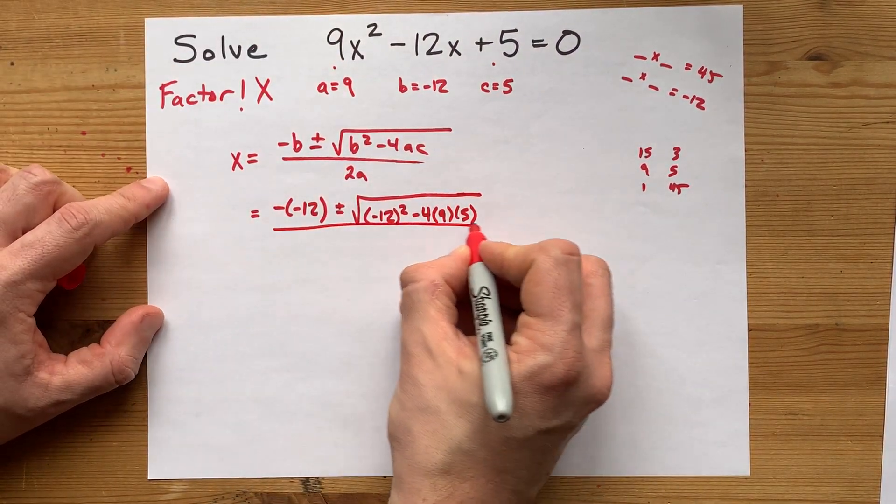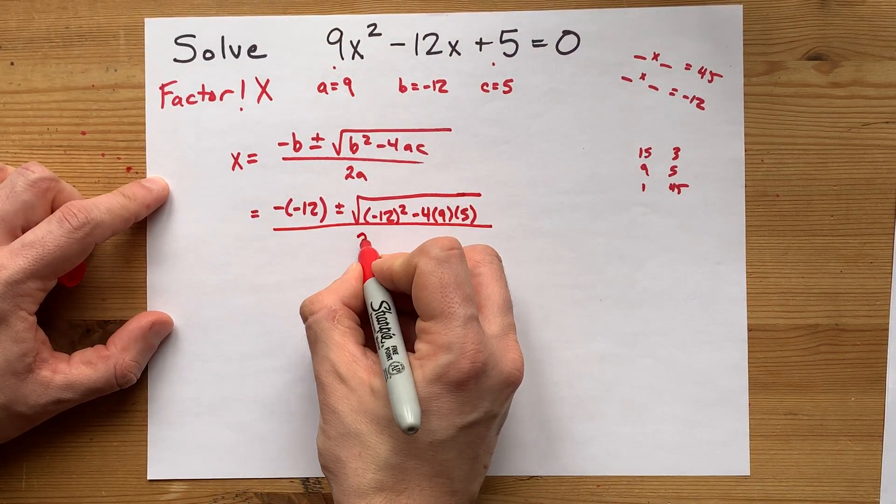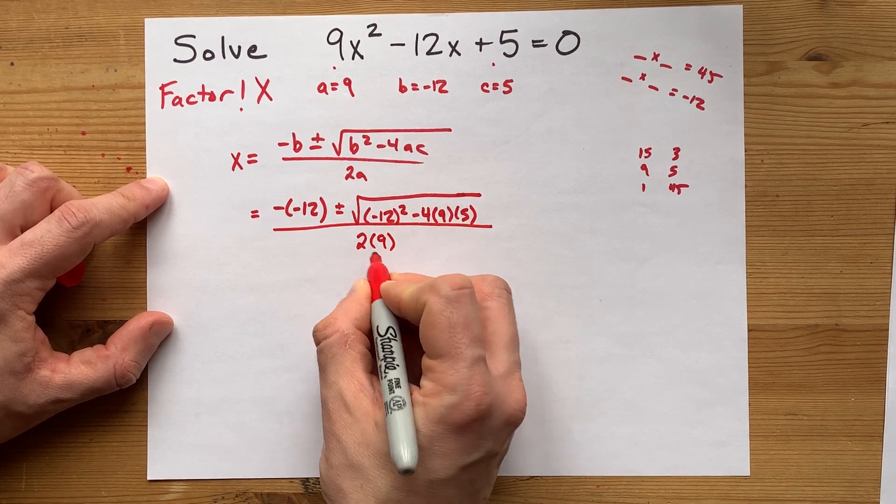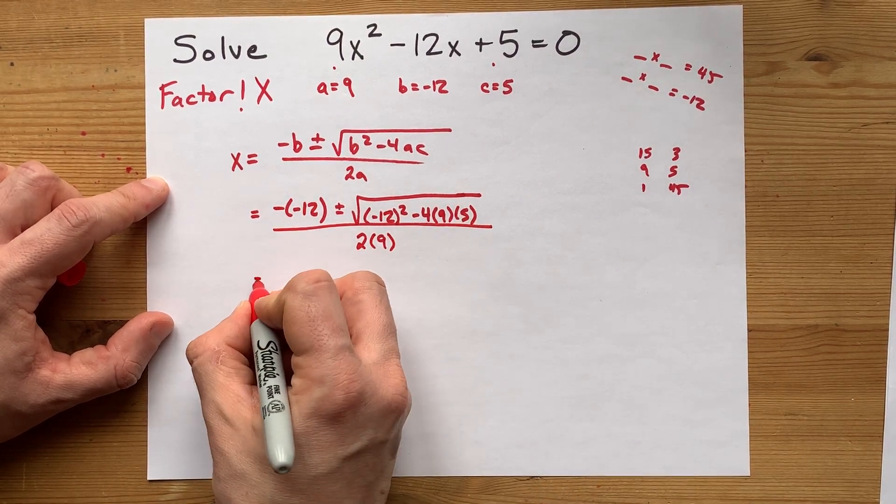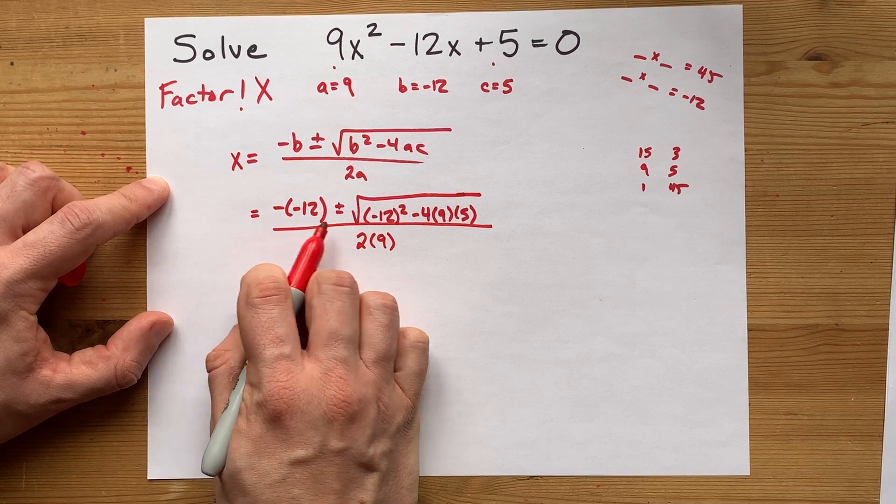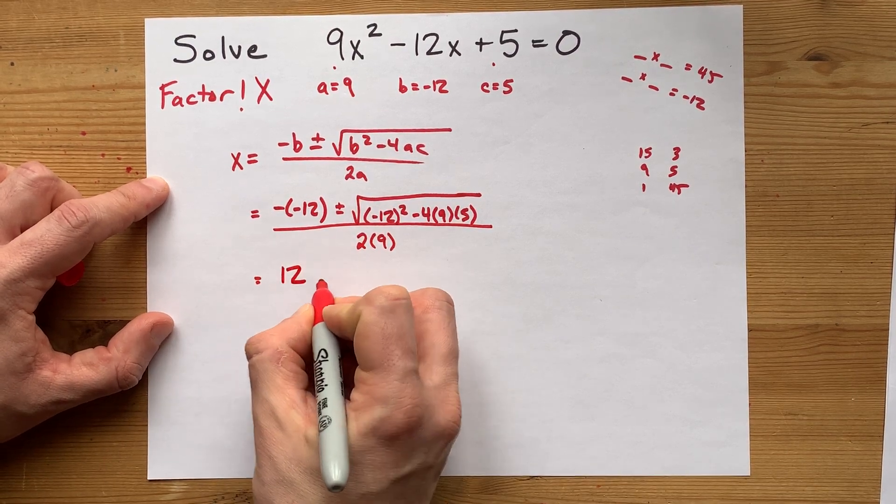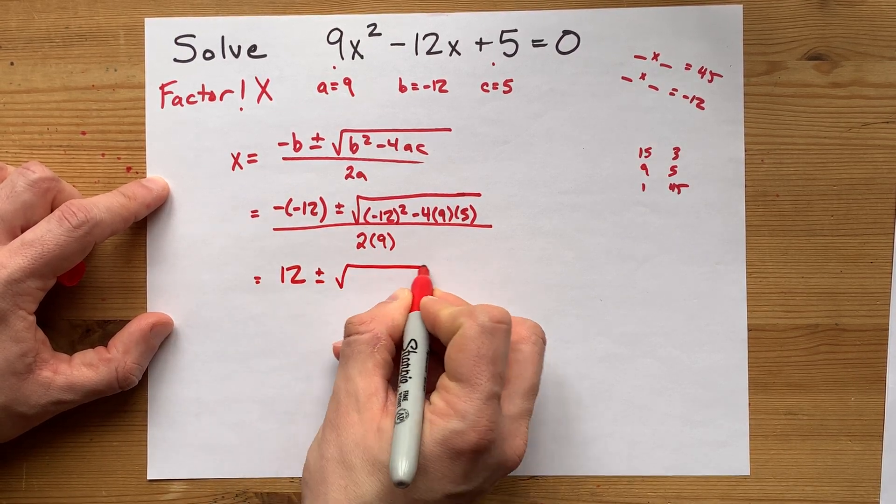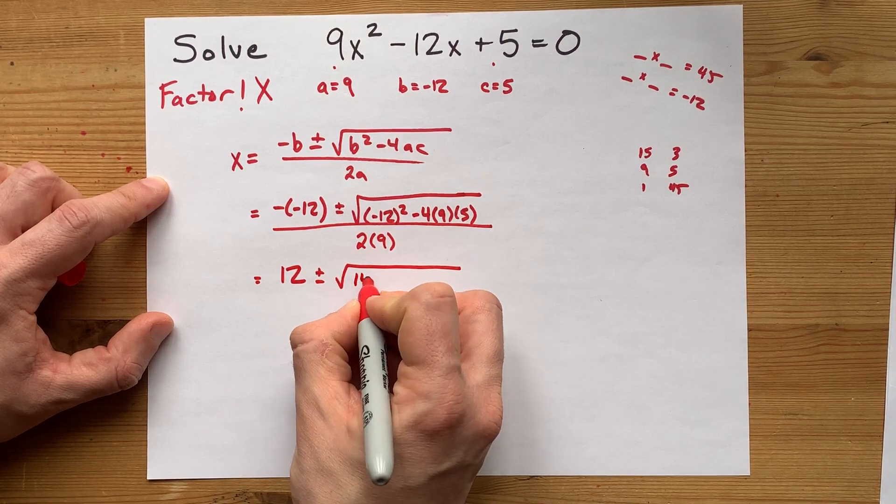Minus 4 times the A value times the C value. And then divide it all by 2A, two 9s. Okay, a little bit of math here. Negative negative 12 is 12. That's easy. Negative 12 squared is 144.